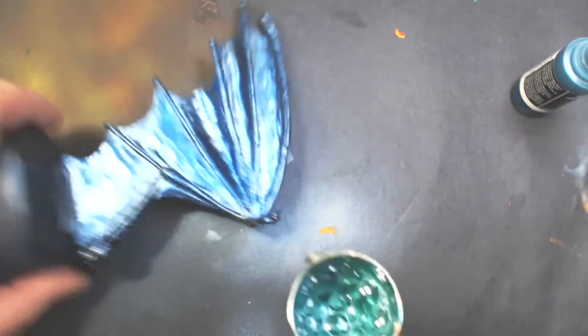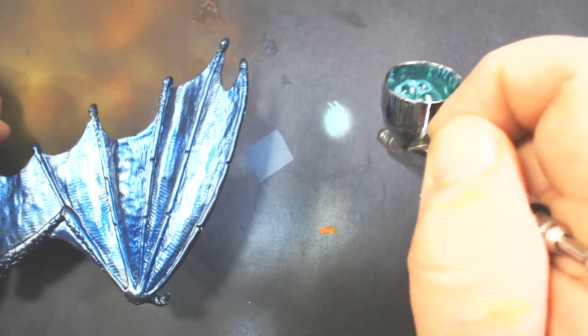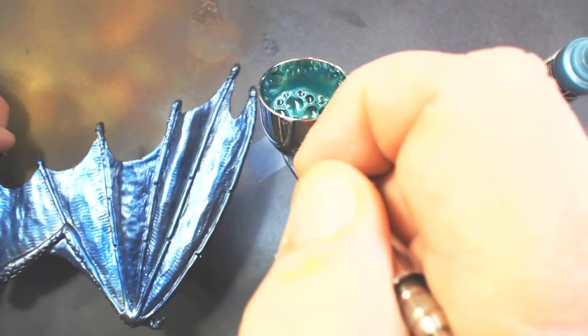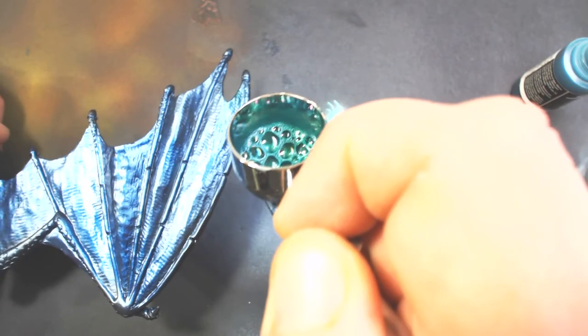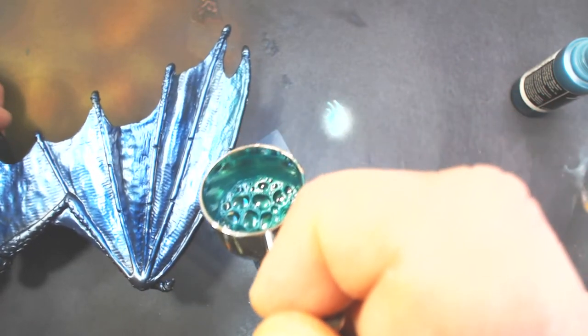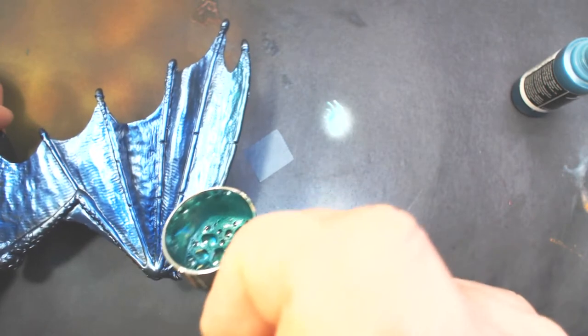So I've cleaned up the airbrush and we're going to do the same thing, only this time instead of the blue ink we will use the Inktense Green ink. And now we're just going to start on one side and start blending that in into the blue.